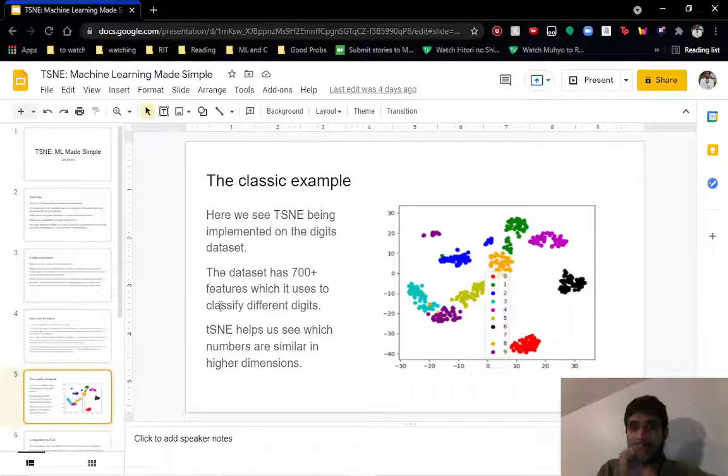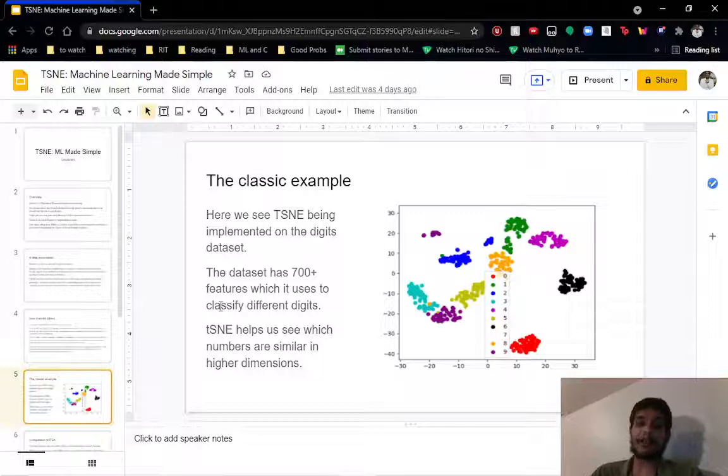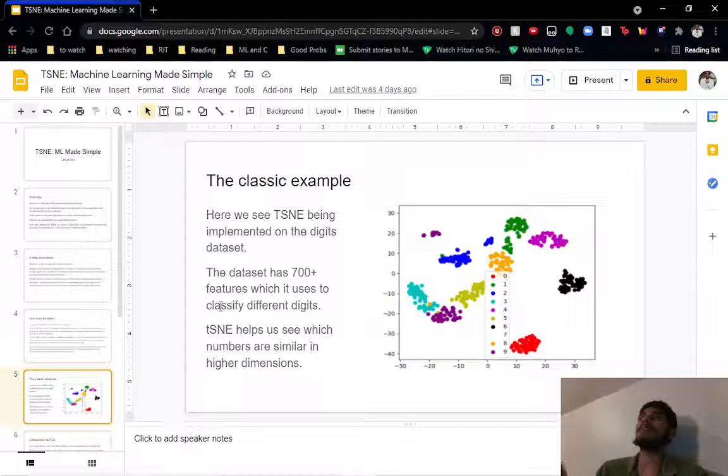Here's an example of the TSNE data set, and this was actually the classic example they gave with it, which is the digits data set. The digits data set has 784 features and it tries to classify what digit you've written. Using OCR, you might write a digit or sketch out a number. They created a machine learning algorithm that can take that drawing and split it into 784 different features, and then they used a convolutional neural network to identify what digit we were dealing with.